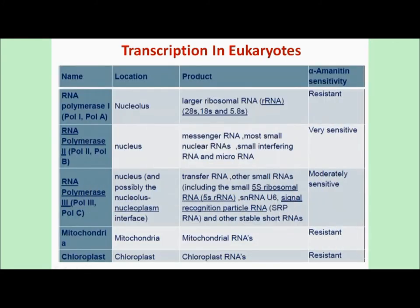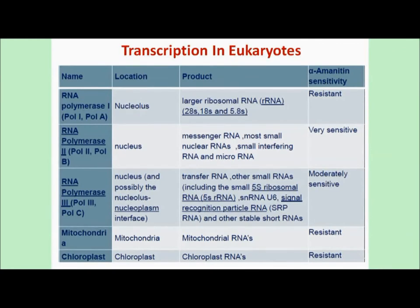Transcription in eukaryotes differs from prokaryotes in that eukaryotes have three types of RNA polymerase: RNA polymerase 1, 2, and 3. RNA polymerase 1 is located in the nucleolus and forms rRNA. RNA polymerase 2 is found in the nucleus and forms mRNA. RNA polymerase 3 helps in the synthesis of tRNA.